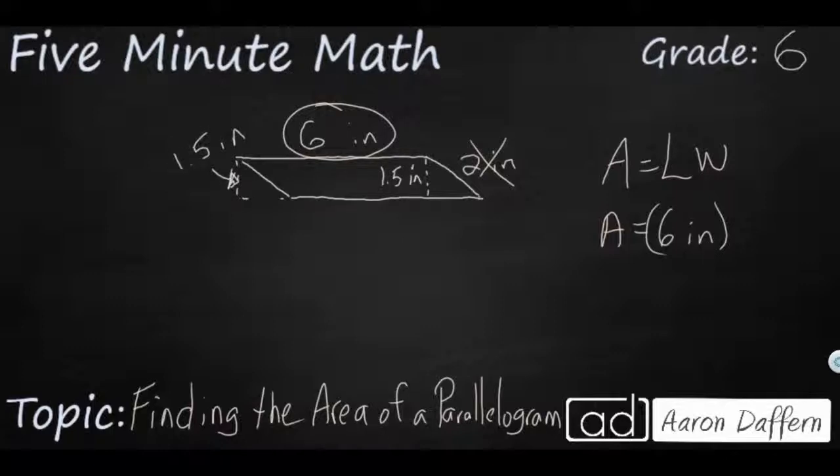The only trick here is to remember that the slanted side, if given, that is not the height. You need straight up and down, which is perpendicular to the bottom side. So we can take our six and our 1.5, and then that's just basic multiplication. Six times 1.5, the area is going to equal nine. Make sure we have inches squared.